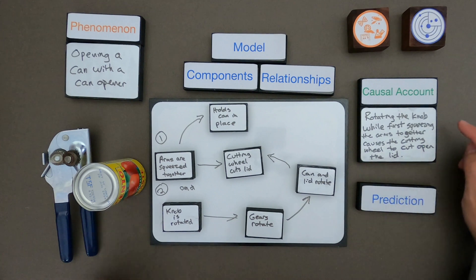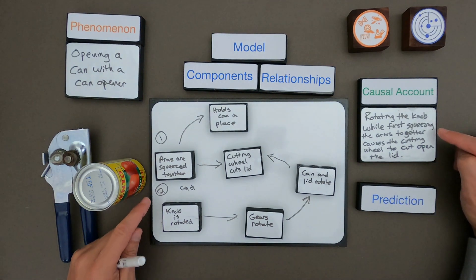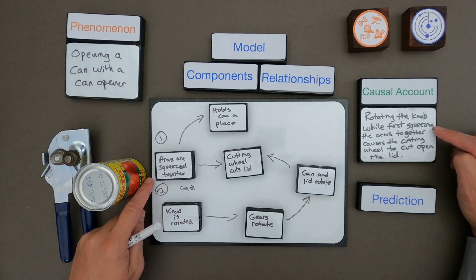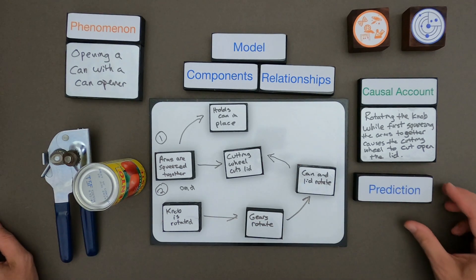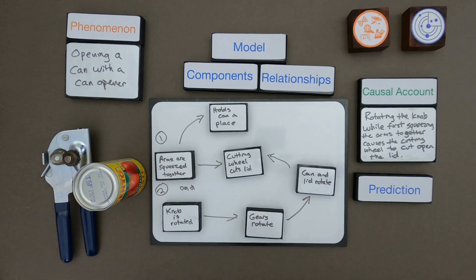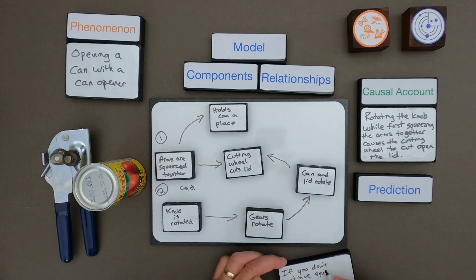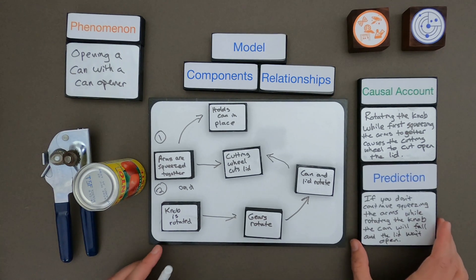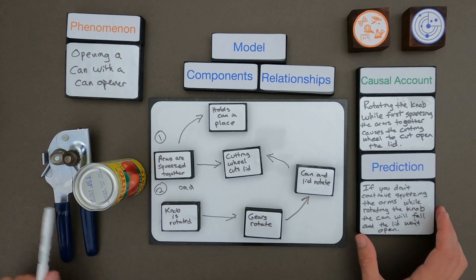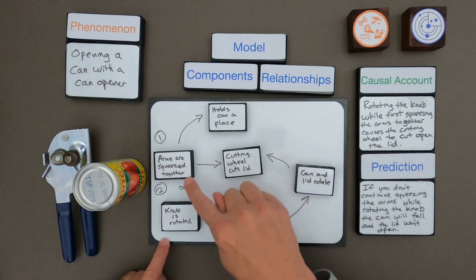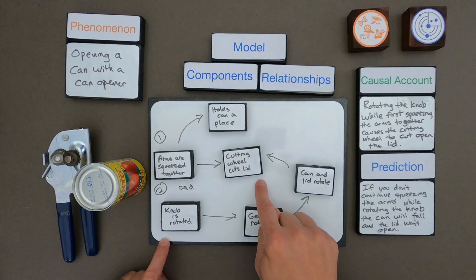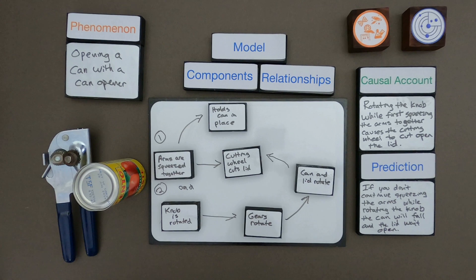What I said for the causal account is: rotating the knob while first squeezing the arms together causes the cutting wheel to cut open the lid. That's at the center of these two causal loops. Now that I've written the causal account, the last thing is to write a prediction. The prediction I wrote is: if you don't continue squeezing the arms while rotating the knob, the can will fall off — because squeezing the arms holds it in place — and the lid won't open because you won't be able to cut it with the cutting wheel. So that is my causal model.